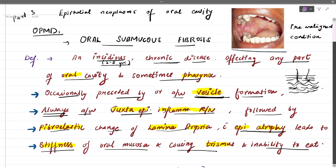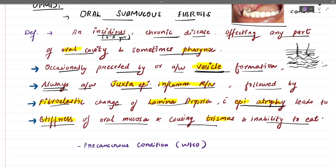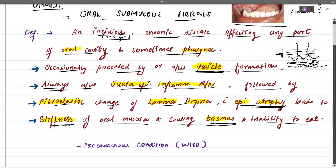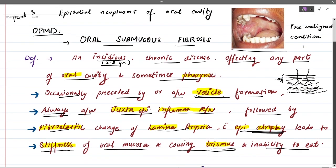This leads to vesicle formation. The juxta-epithelial inflammation is caused by these irritants. Due to a hyper-immune response, a lot of fibroblasts appear and fibrosis happens in the connective tissue. Blood vessels become strangulated due to this fibrosis, so the epithelium cannot get the nutrients it requires, leading to epithelial atrophy, stiffness of the oral mucosa, and reduced mouth opening.